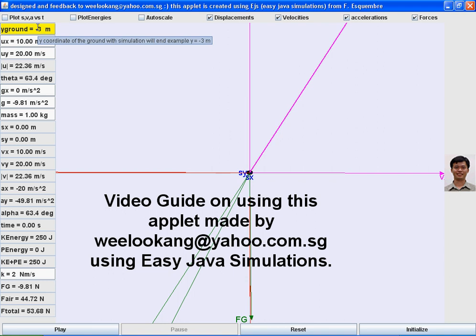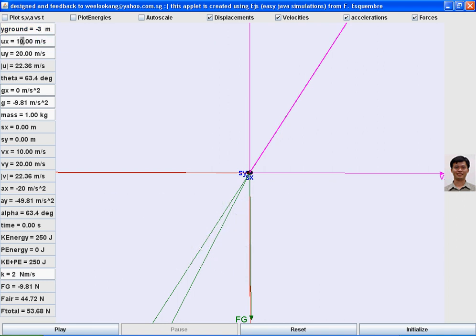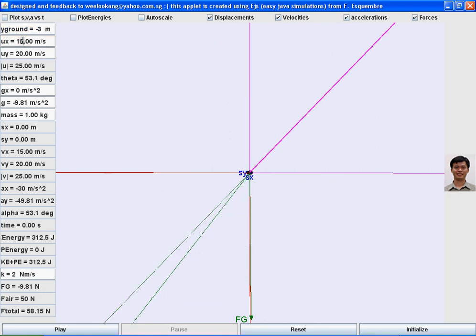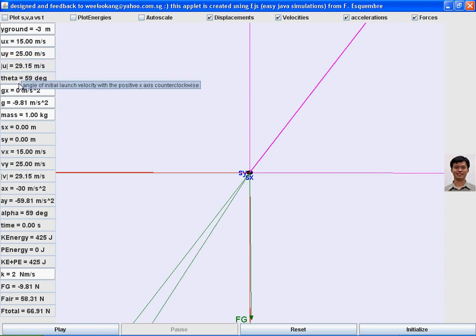Select Y ground negative 3 because I want the simulation to end at Y equal to negative 3. Initial velocity in X and Y direction. You can even change gravity, but for now I'm going to change the mass.